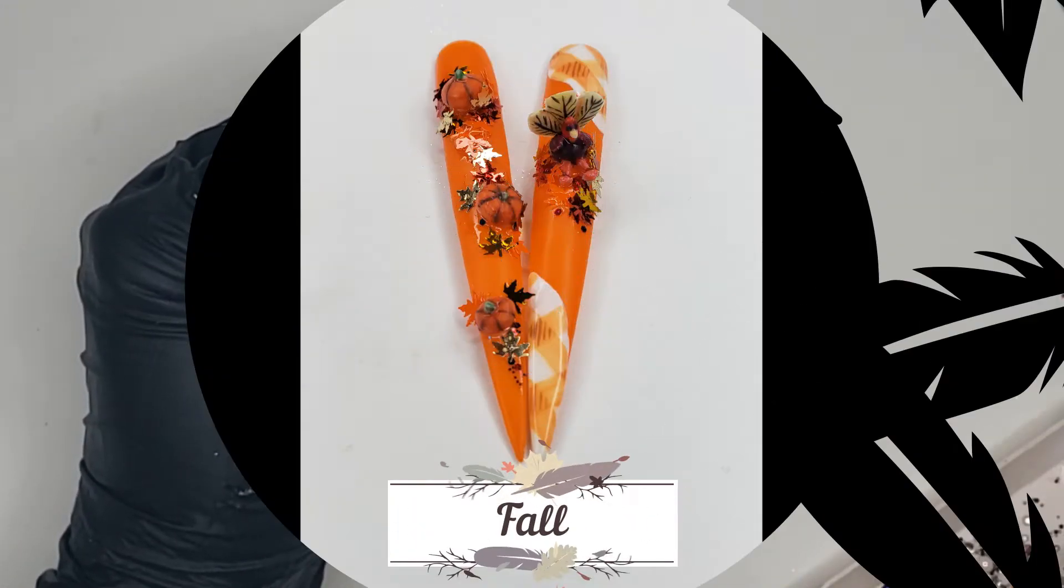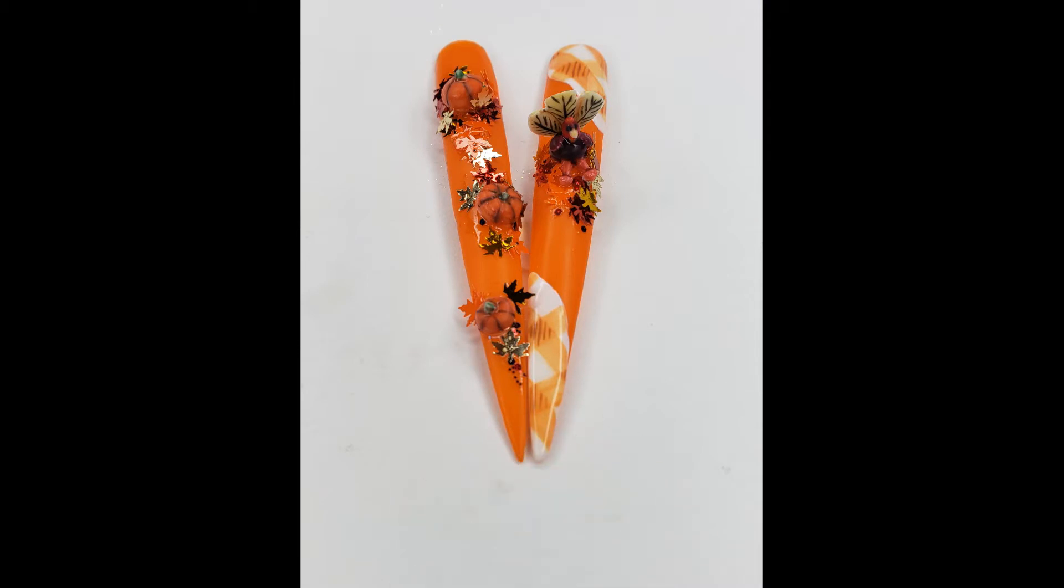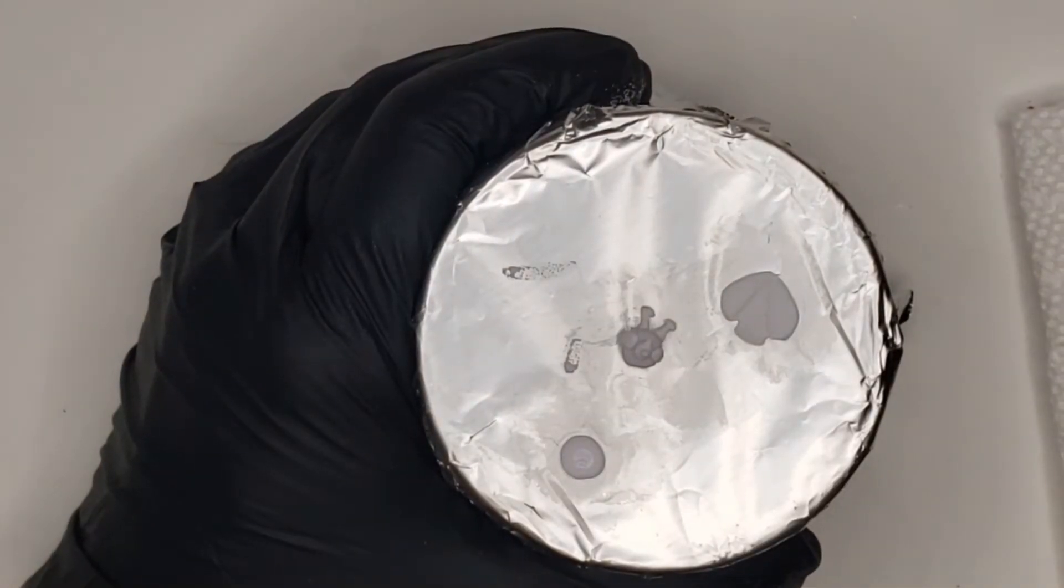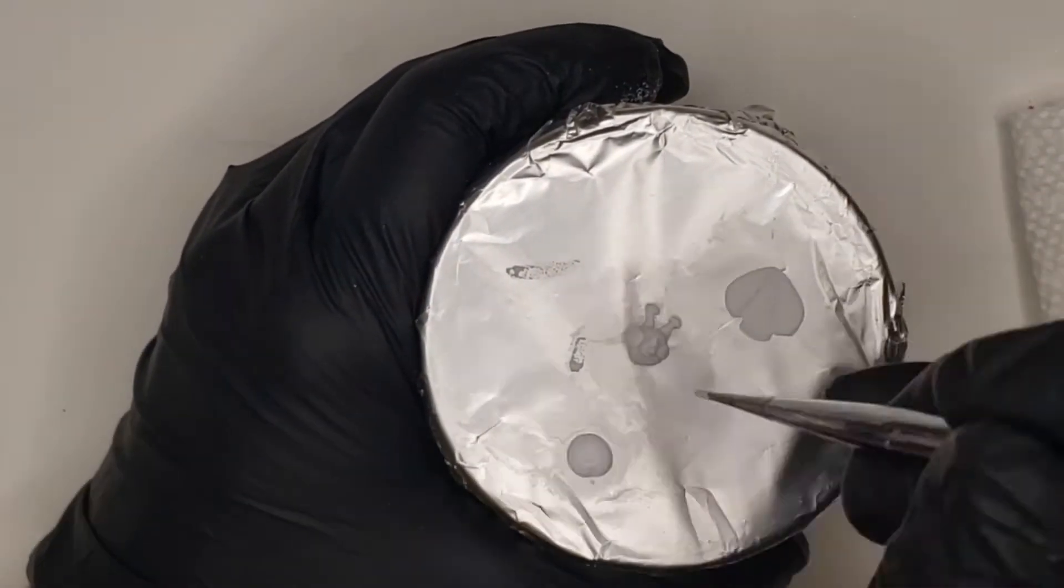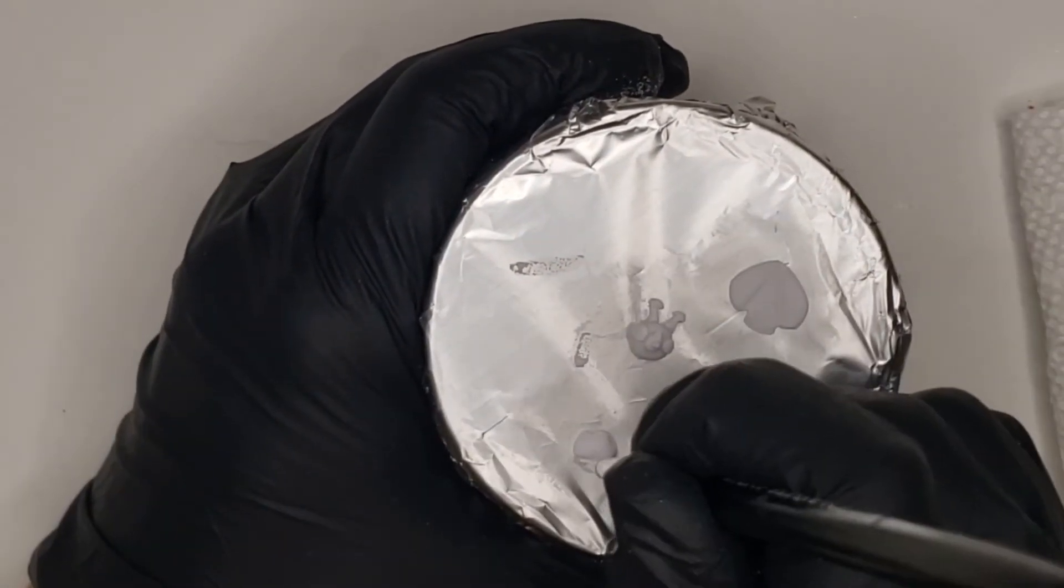And now for my favorite season, fall. What says fall more than pumpkins and a turkey? Sculpt your turkey and pumpkins with white acrylic and paint with shellac.